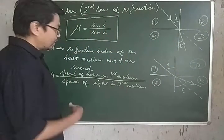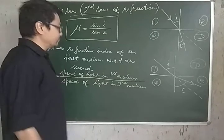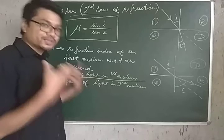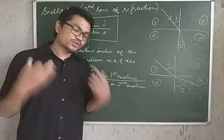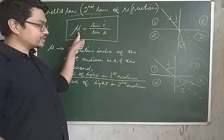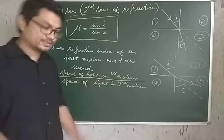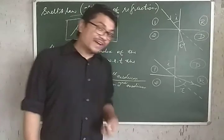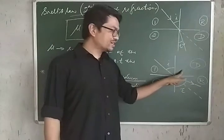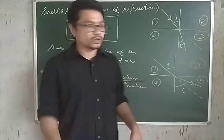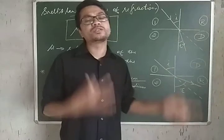Another relation I want to discuss is between the refractive index of the second medium with respect to the first and the speed of light. The very fact that a ray of light bends when it moves from one transparent medium to another is because light travels with different speeds in different media.